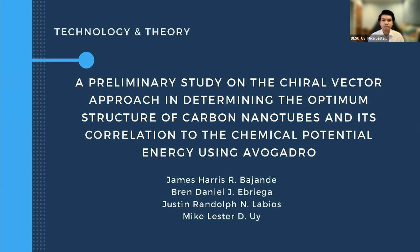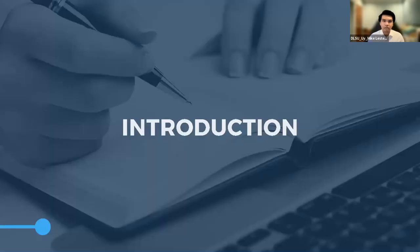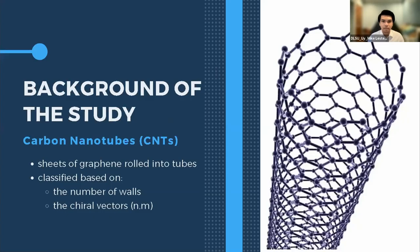To give a background of our research, we shall first define what a carbon nanotube, or CNT, is. If you are familiar with graphene, a CNT is essentially a rolled-up version of it. It can be classified based on how many walls or layers it has and based on its chiral vectors. The chiral vectors is a convention used to describe the orientation as to how the graphene is rolled up into a carbon nanotube.